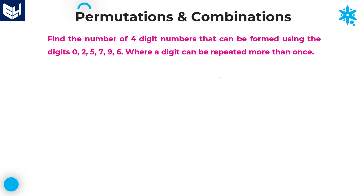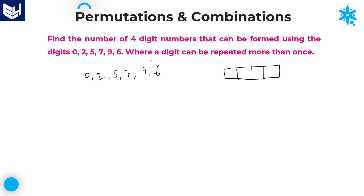Let us move on to the next question: find the number of 4-digit numbers that can be formed using the digits 0, 2, 5, 7, 9, and 6 — these 6 digits — where a digit can be repeated more than once. The condition states that repetition of digits is allowed, meaning any digit can be repeated any number of times.